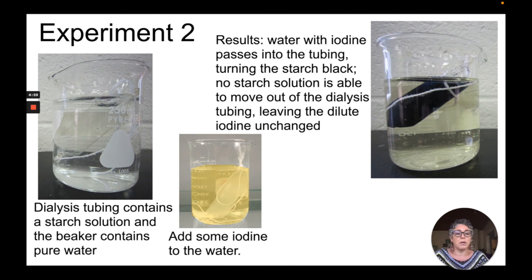So hopefully you recall that iodine is an indicator for the presence of starch, and so the water with the dilute iodine has been able to pass through the viscing tubing into the starch solution and so iodine is then going to turn blue-black as we see there in the picture.